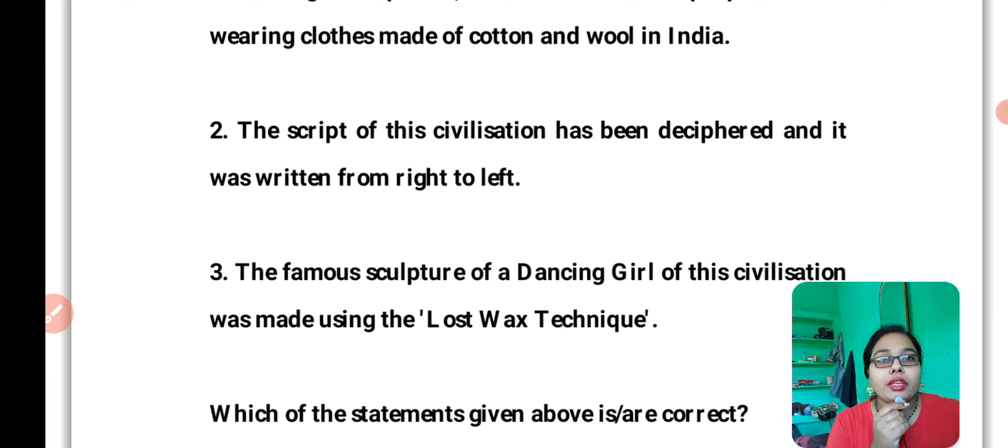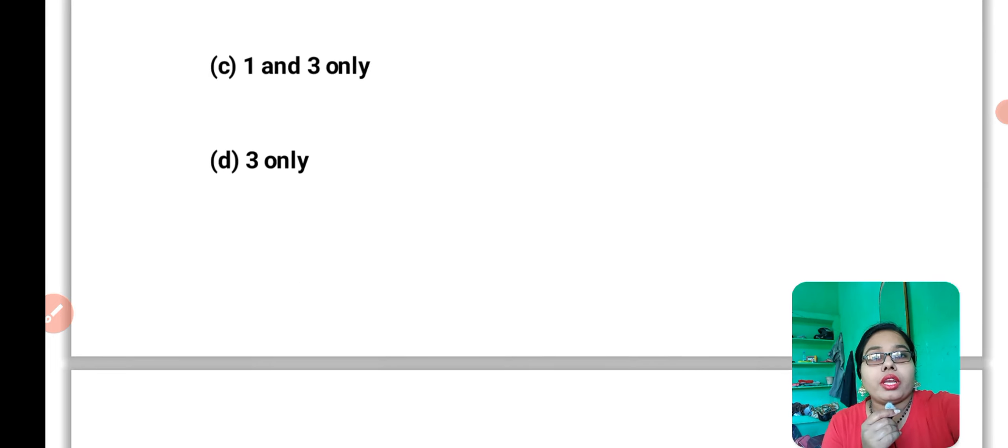The famous sculpture of Dancing Girl of this civilization was made using the Lost Wax technique. The correct answer is option D, only the third statement is correct.